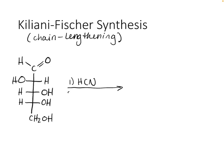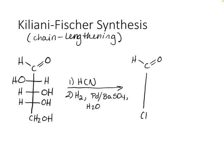The second step involves using hydrogen with a poisoned catalyst — palladium with barium sulfate and also water. This is going to give you two products, because when you add a chiral center, it could either be R or S. So we're going to end up forming two different sugars here.